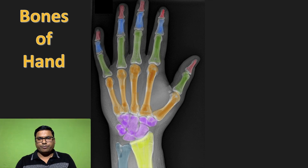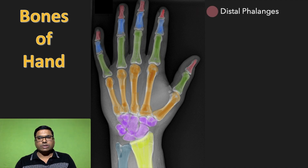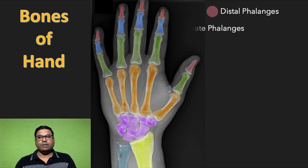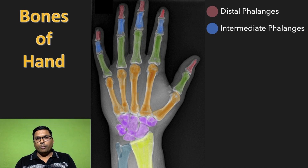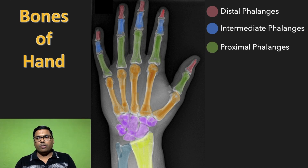The bones which are present at the tip of your finger are called distal phalanges. The bones present in the middle are called intermediate phalanges. And the bones present at the base of your finger are called proximal phalanges.